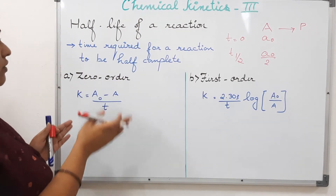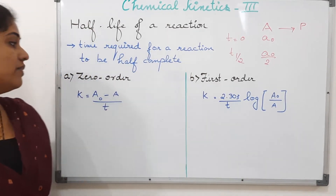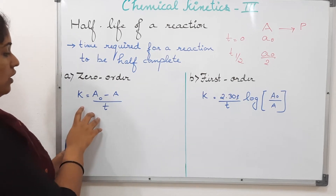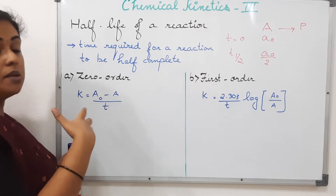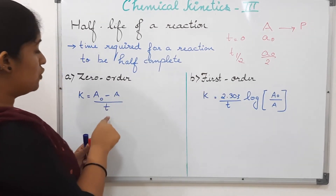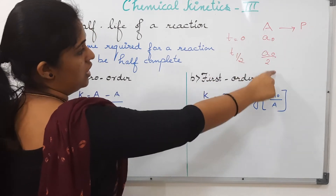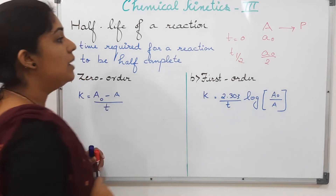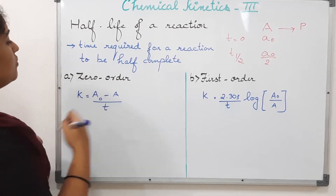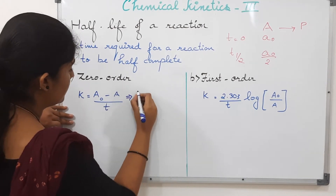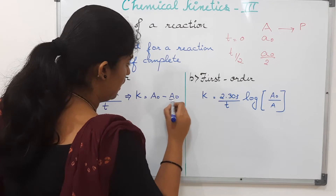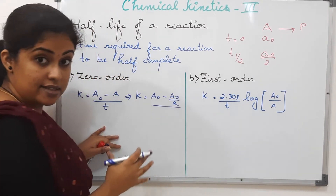Now let us predict the half-life for zero-order and first-order reactions. For this, we have to use the integrated rate law which we saw in the previous video. For a zero-order reaction, the integrated rate law can be written as rate constant k equal to initial concentration minus final concentration divided by time, that is A-naught minus A by t. We need to find t-half, and at half-life, the concentration reduces to A-naught by 2. So we substitute A-naught by 2 as the final concentration.